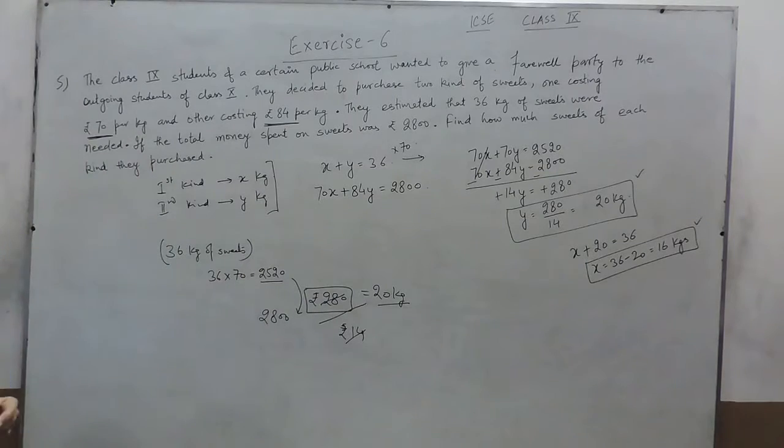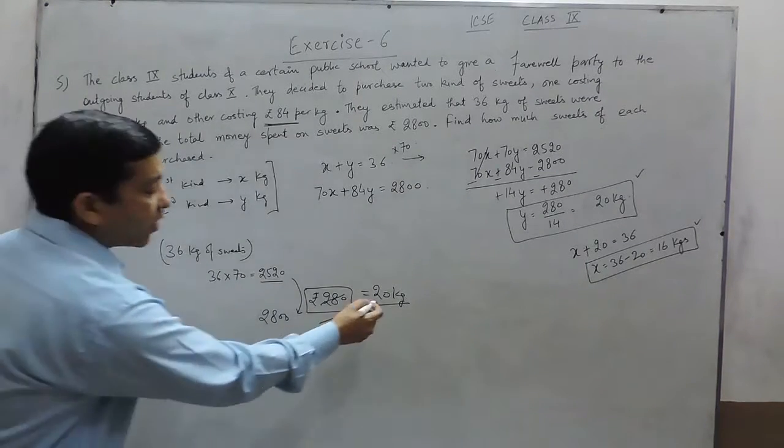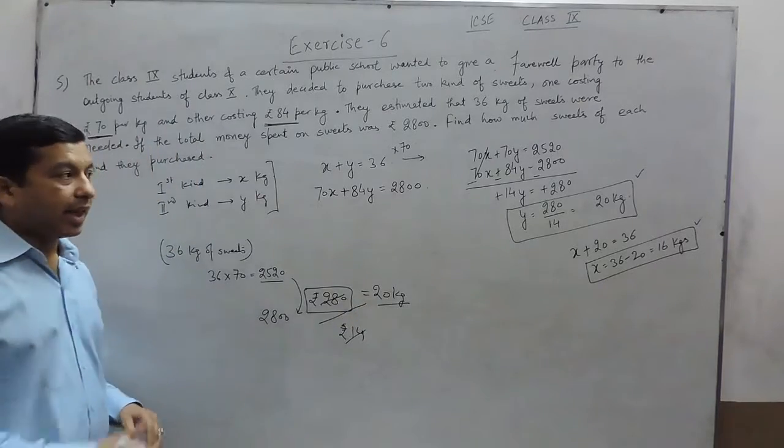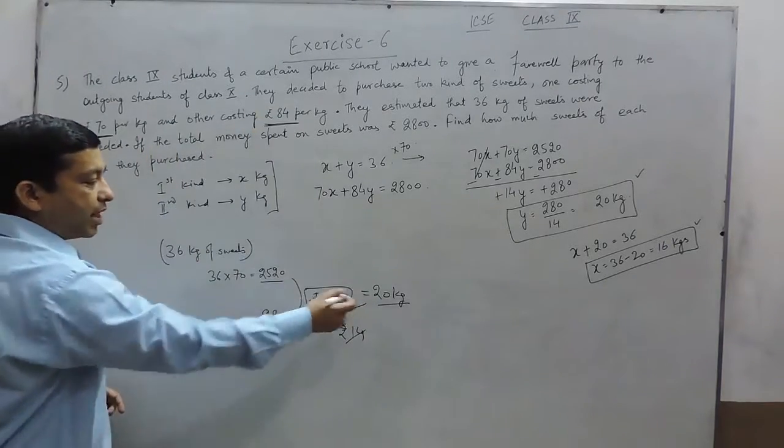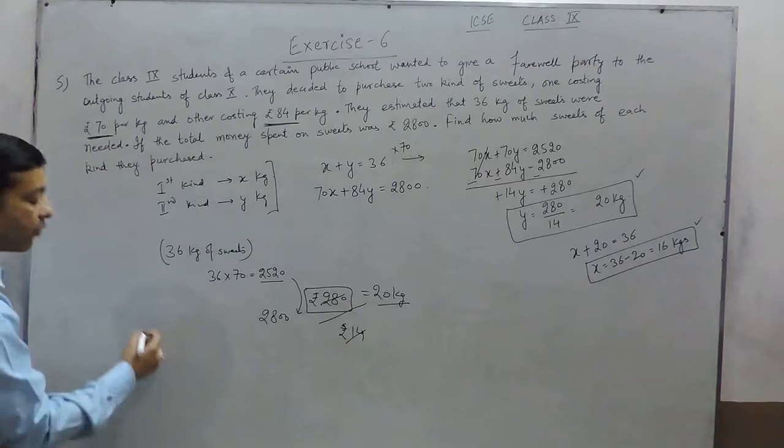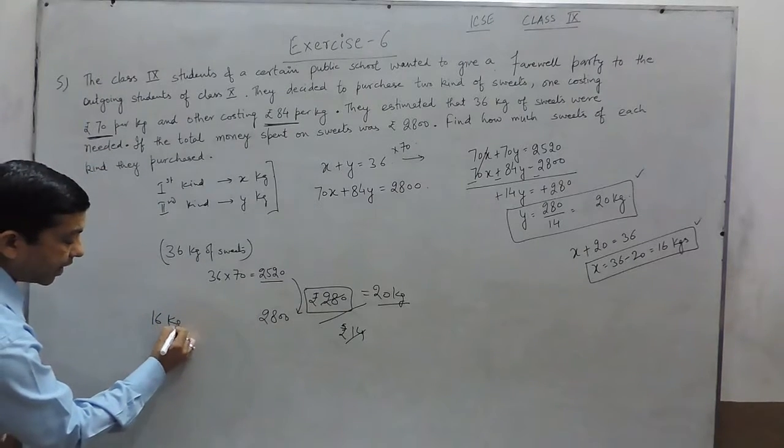So, the first kind of sweets we have to replace by second kind of sweets and that weight will be 20 kgs. It means that the second kind of sweets is 20 kgs. Automatically, the first kind of sweets will be 16 kgs.